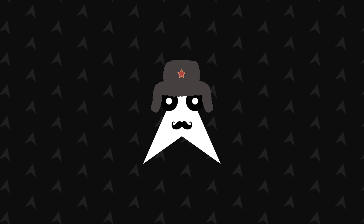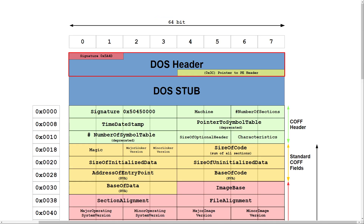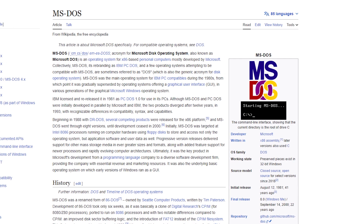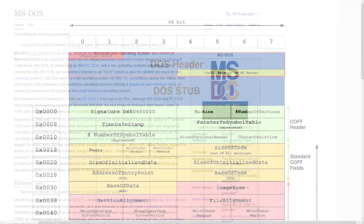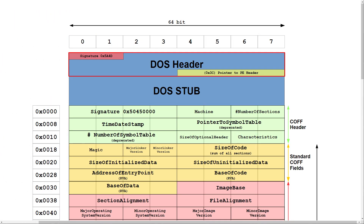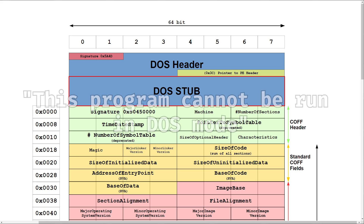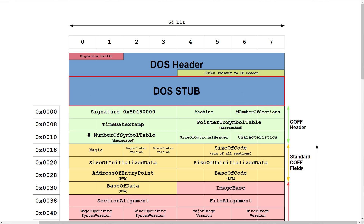The first header in this format is the DOS header. It is 64 bytes long and exists because of MS-DOS, which was an old branch of operating systems developed by Microsoft. The goal of this header is to allow old systems like MS-DOS to parse the executable just to execute the DOS stub, which is right after this DOS header and usually just prints the message "This program cannot be run in DOS mode." So it is pretty much entirely useless today.